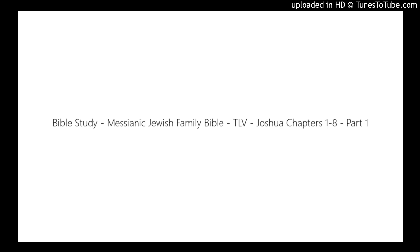We're back for another exciting week of reading through the Messianic Jewish Family Bible, Tree of Life Version, TLV. Last week we completed the book of Deuteronomy, which was the final book of the Torah. We've gone through the first five books of the Bible, known as the Torah, or the Law of Moses, or the Pentateuch. And we are now at week number 19 of reading through this Bible.